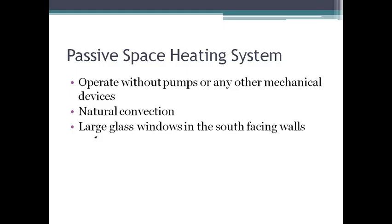The two different types of solar heating systems are the passive space heating system and the active space heating system. In the passive heating system, we do not use any pumps or other mechanical devices to circulate the air. We use the natural convection process of air in order to circulate hot air through the system.